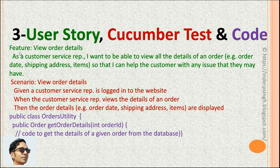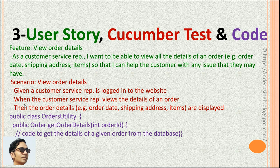This is the third example. The feature can be 'view order details,' and the user story is: as a customer service representative, I want to be able to view all details of an order — for example order date, shipping address, items — so that I can help the customer with any issue that they may have. The Cucumber test has a scenario 'View order details.' Given is the preconditions — given a customer service representative is logged in to the website. When is the actions or steps — when the customer service representative views the details of an order. Then is the expected results — then the order details are displayed.